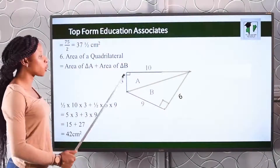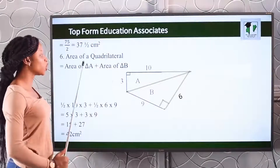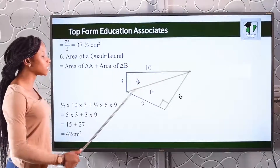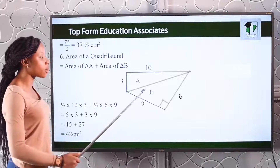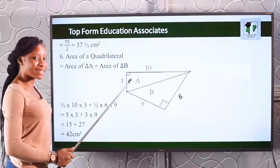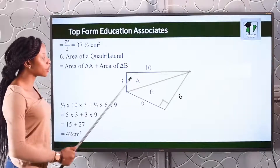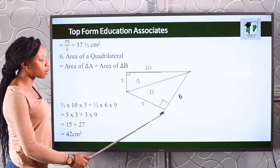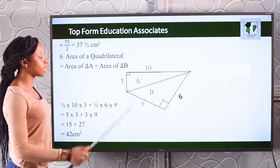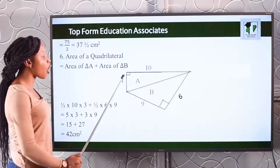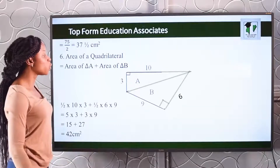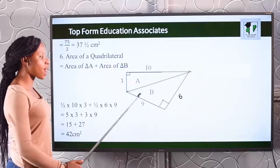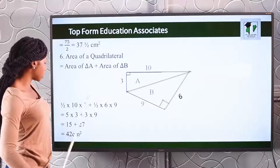Number six, we are given a quadrilateral and asked to look for the area. Remember what we said about quadrilaterals — a diagonal divides a quadrilateral into two right-angled triangles. If you look at this quadrilateral, you will see a right angle here and another right angle here. We've named them A and B. To find the area of this quadrilateral, we sum the area of triangle A and the area of triangle B.